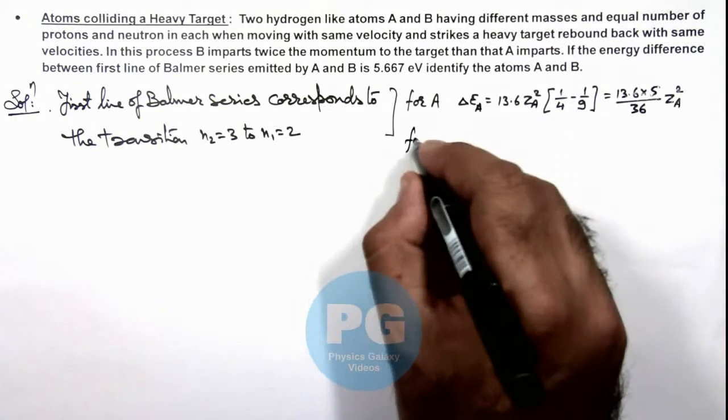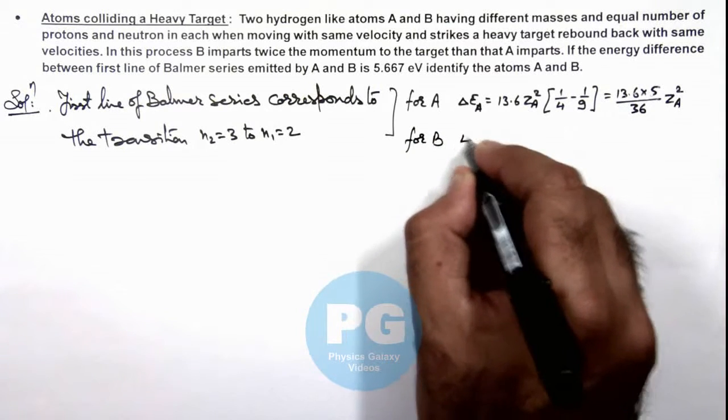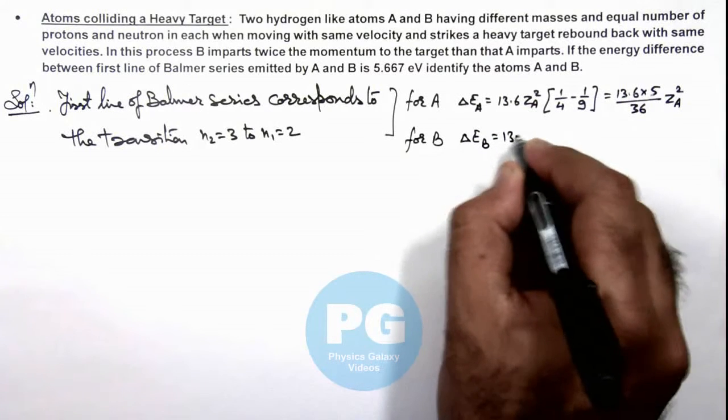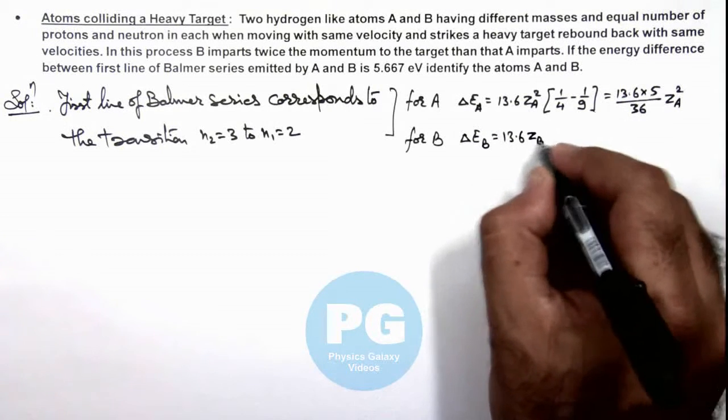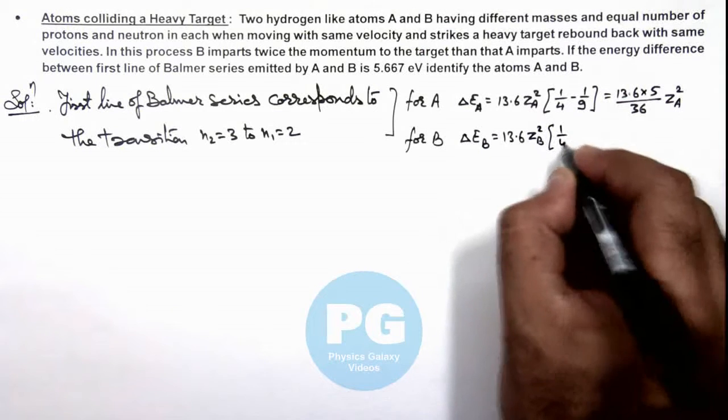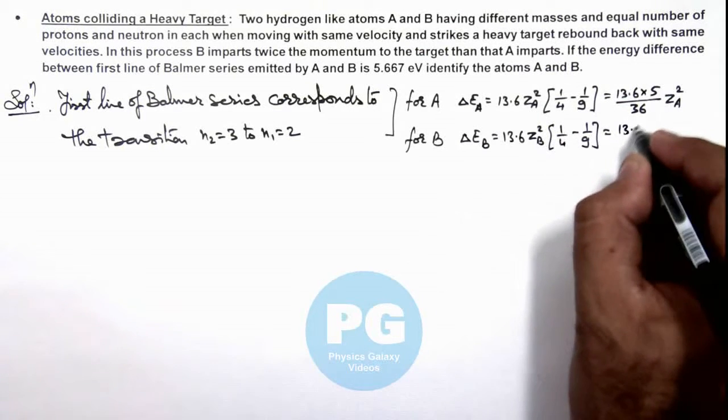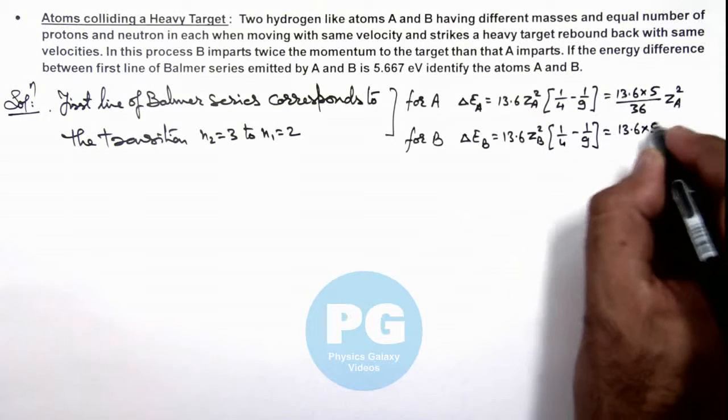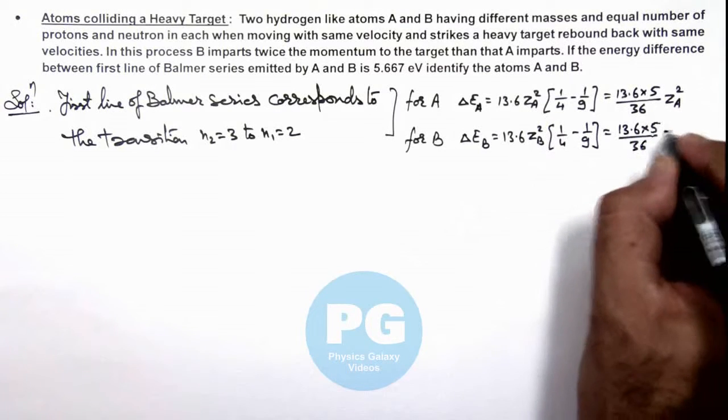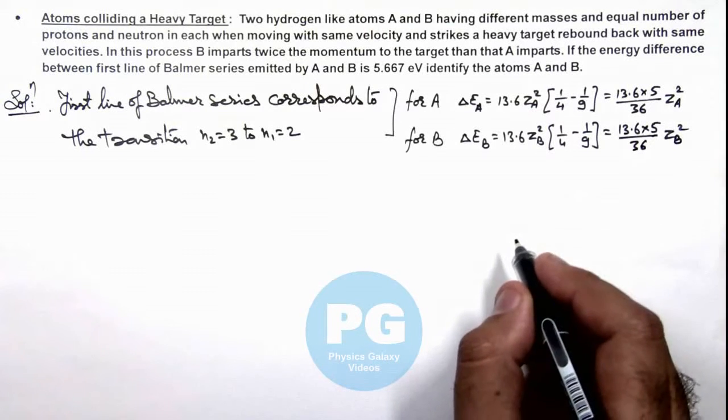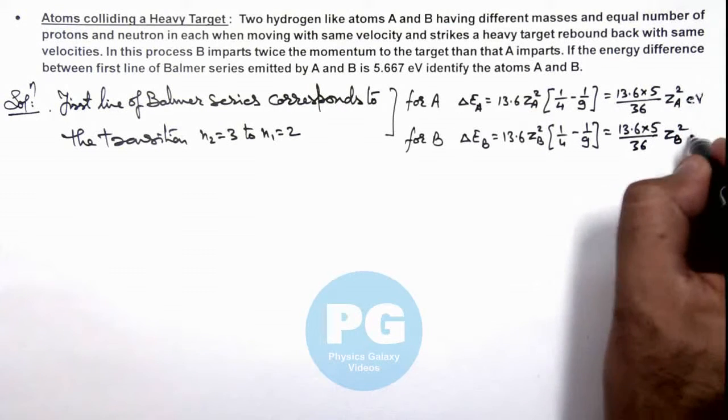Similarly for atom B we can write ΔEᵦ is equal to 13.6 Zᵦ² (1/4 - 1/9), which gives us 13.6 multiplied by 5/36 Zᵦ². In electron volt we are getting the results.